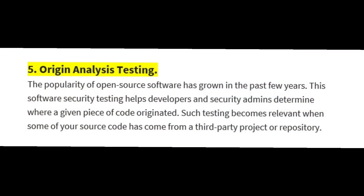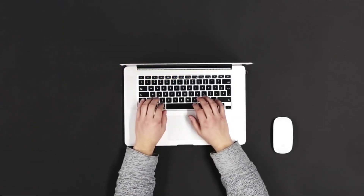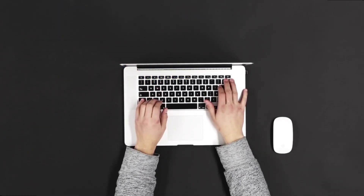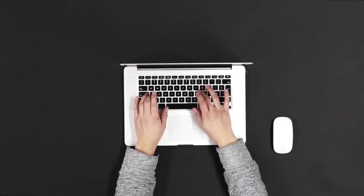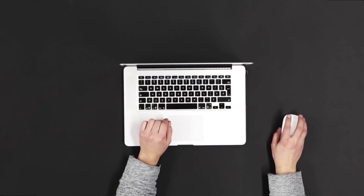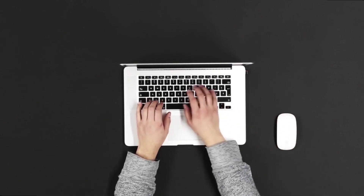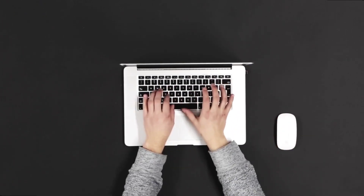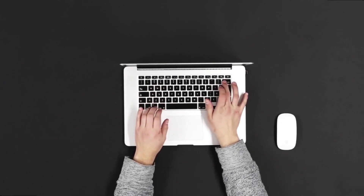In analysis testing, the popularity of open source software has grown in the past few years. Software security testing helps developers and security admins determine where a given piece of code originated. Testing becomes relevant when some of your source code has come from a third-party project or repository. The main aim is to identify security issues in third-party code and avoid security problems.